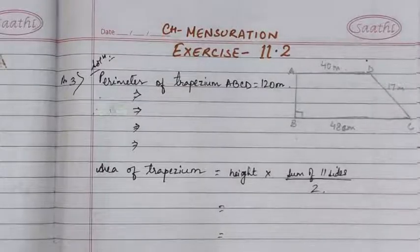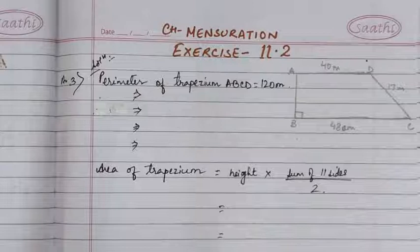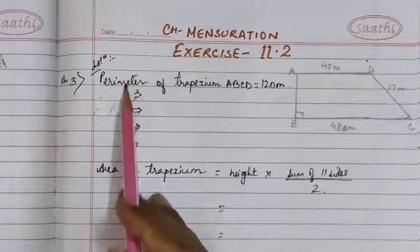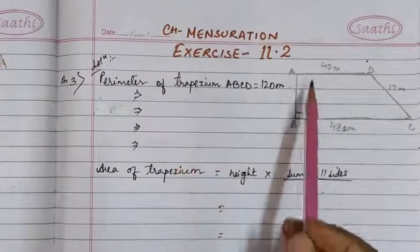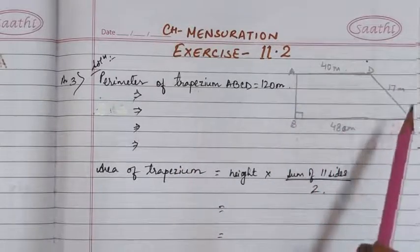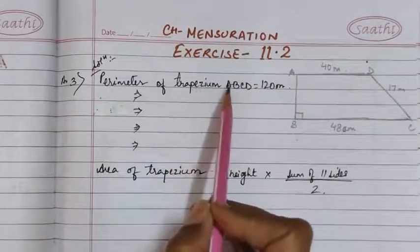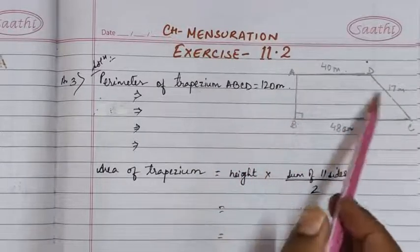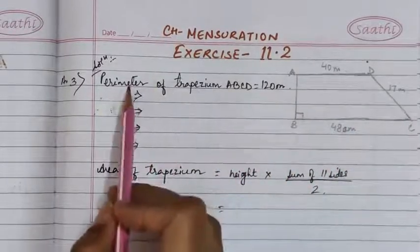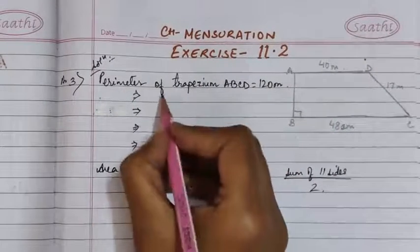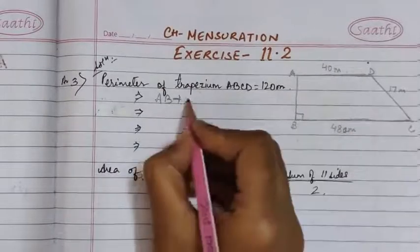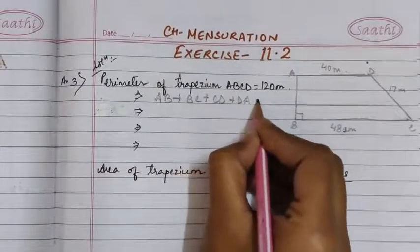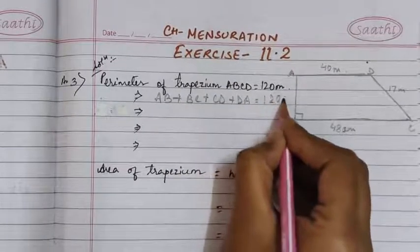In the question it is given that the length of the fence is 120 meters. This length of the fence will be the perimeter of the trapezium, as the fence is going all around the field. So we write: perimeter of trapezium ABCD = 120 m. When we add all the sides of a closed figure we get the perimeter, so it will be AB + BC + CD + DA = 120 m.